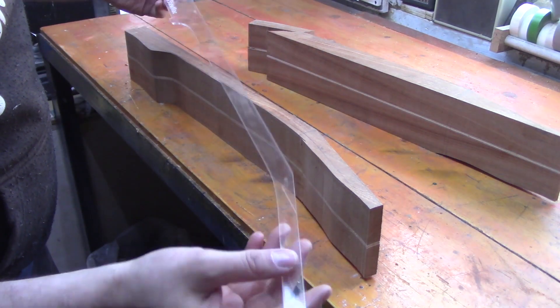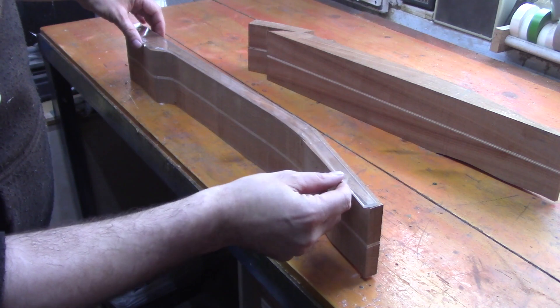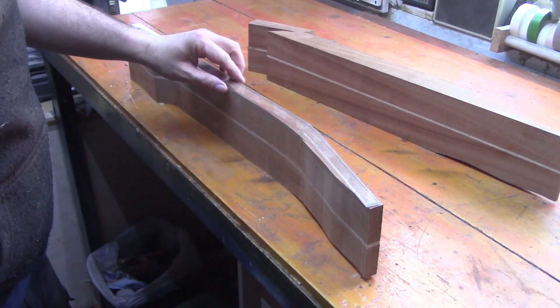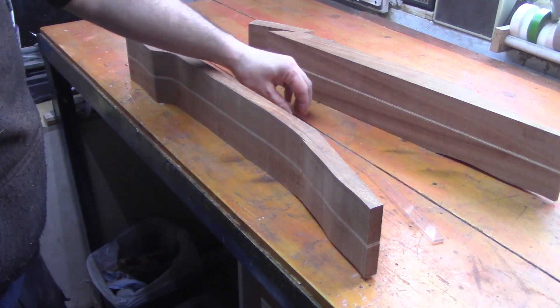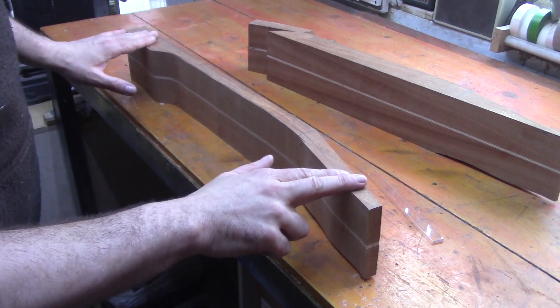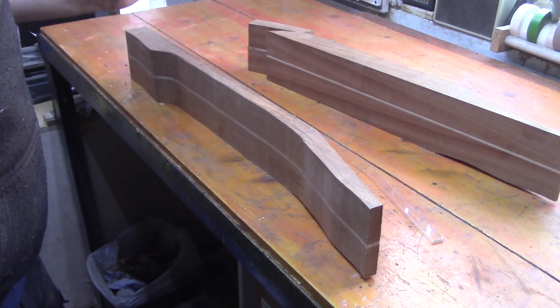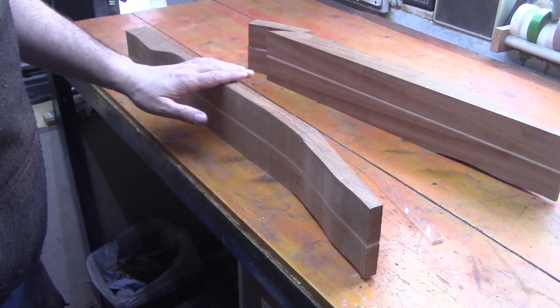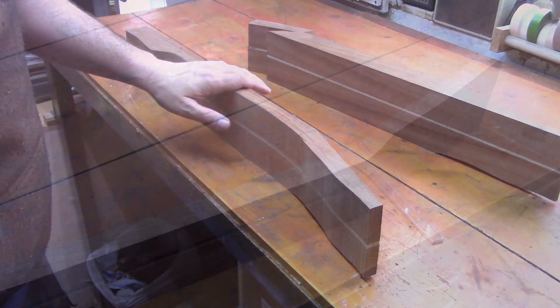We're going to make a much thicker MDF copy of this template, and then we're going to stick that onto our neck blank here. Like we did before, we'll get a straight edge and then we'll use our Robo sander to get everything nice and refined.